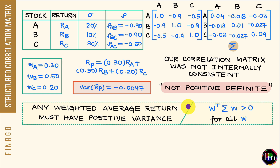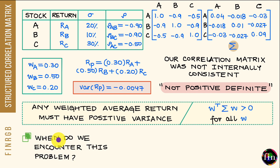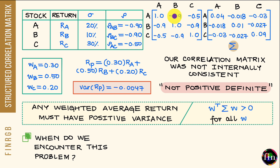Practically speaking, when do we encounter this problem of lack of positive definiteness? We encounter it when conducting stress testing. The base or unbumped correlation matrix we start with is typically positive definite. It is only when we subjectively bump the individual correlations up or down that we break this internal consistency and encounter the problem of lack of positive definiteness.